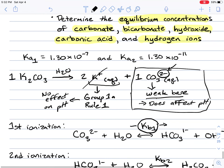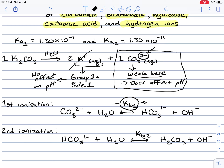The second ionization step takes the product bicarbonate, which still has a negative 1 charge, and ionizes another water molecule, gaining its hydrogen and producing another hydroxide. Since carbonic acid has no more charge, we stop here. This second ionization is represented as Kb2.